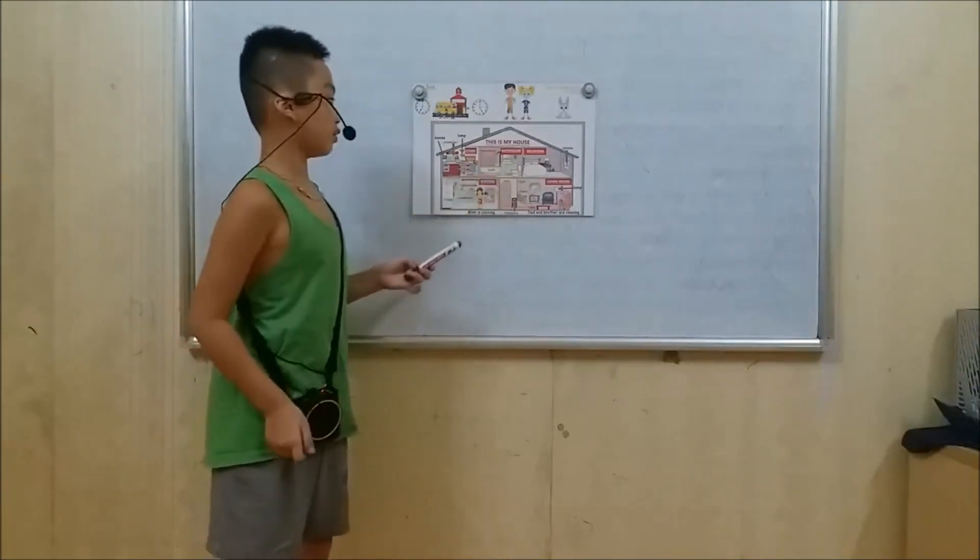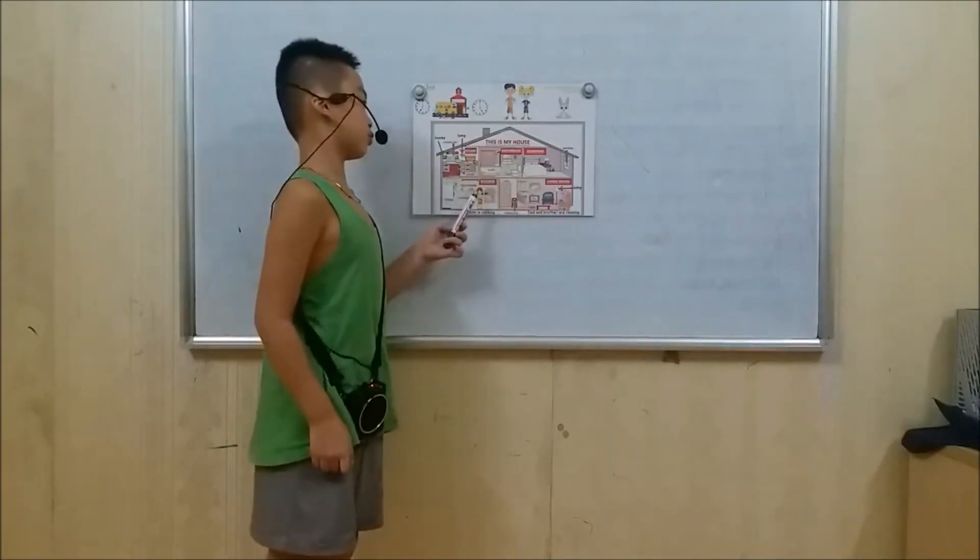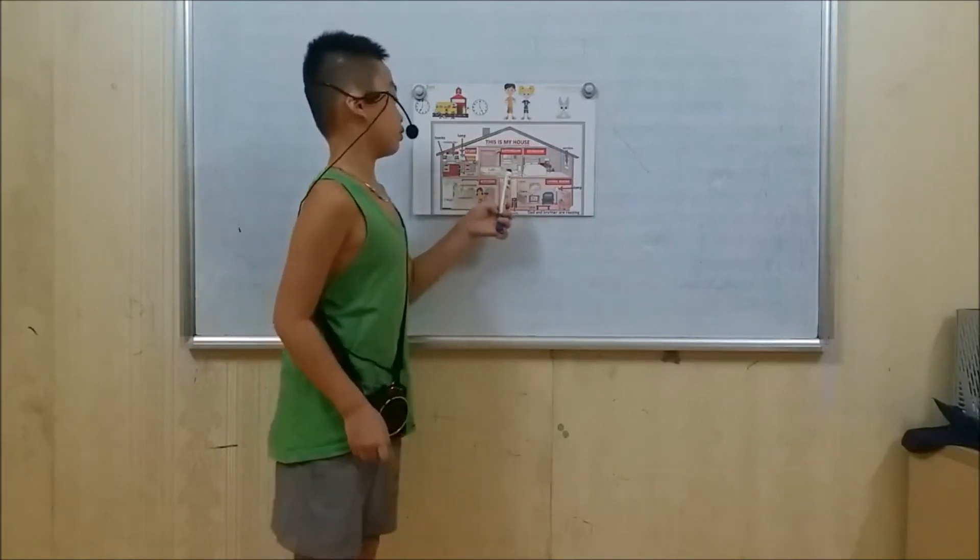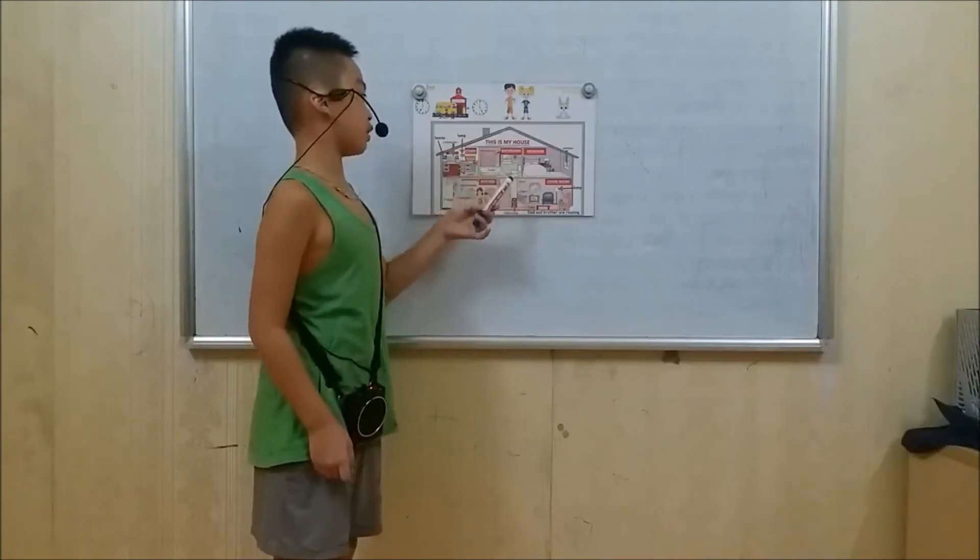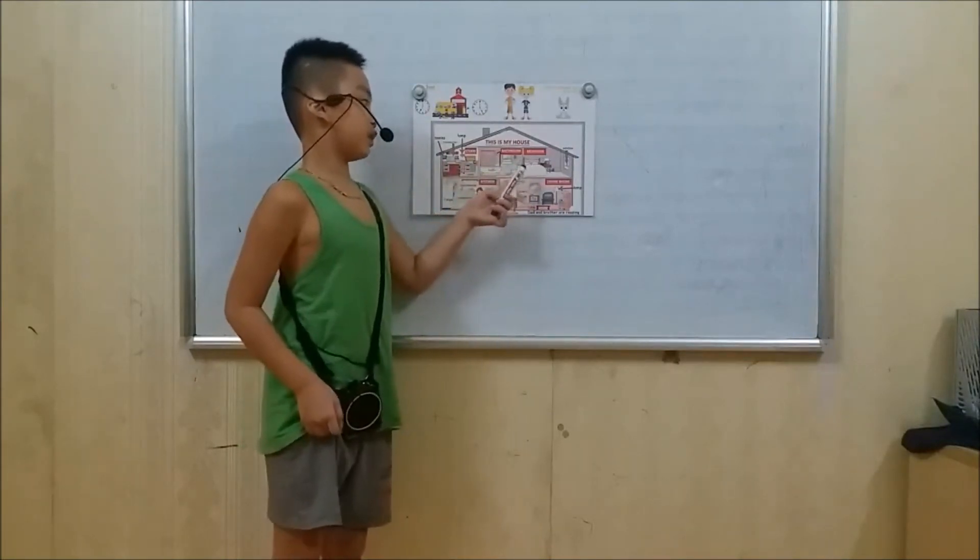Next to the bathroom is a bedroom. There is a big bed. Next to the bed is a lamp on the table. Next to the lamp is a window.